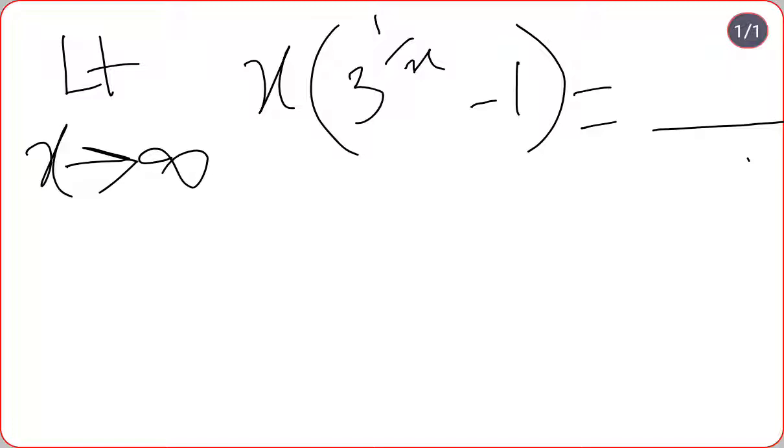The shortcut formula goes something like this: limit x tends to infinity, x into 3 to the power of... in place of 3, I will write my shortcut formula.